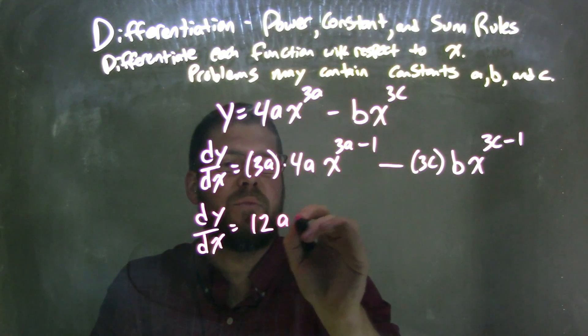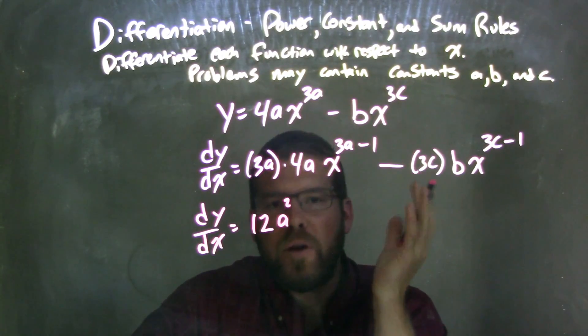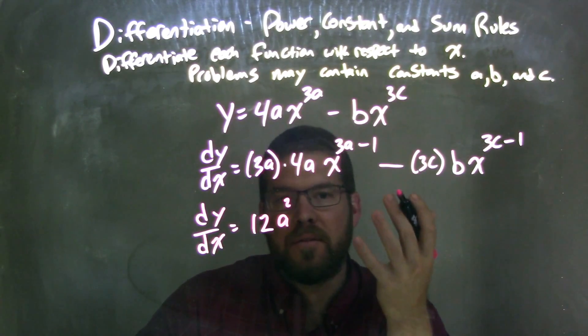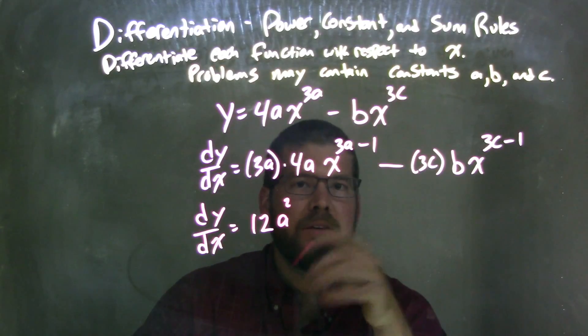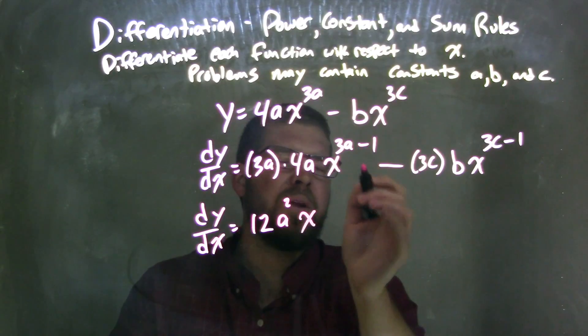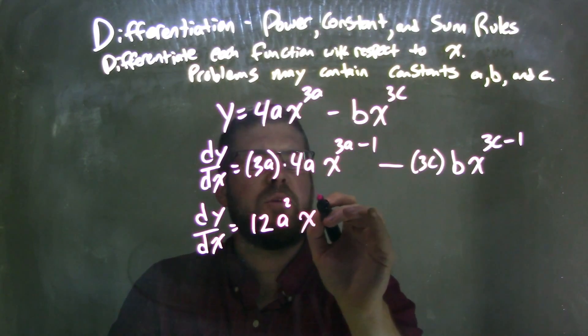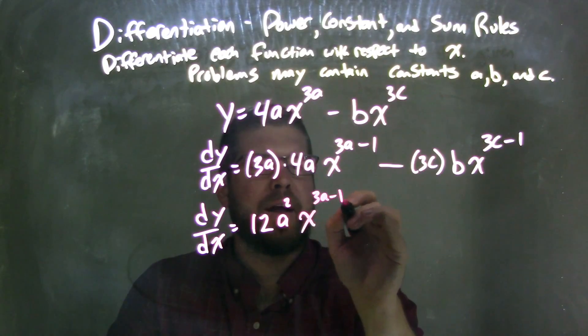And a times a is, I don't know what a is, but I know it's a squared. A times a is a squared. So we don't know what a is, but we know a times a, whatever that constant is, the same thing as a squared. We have our x here. Now 3a minus 1, we don't really know what a is, so we leave the exponent to just be 3a minus 1.